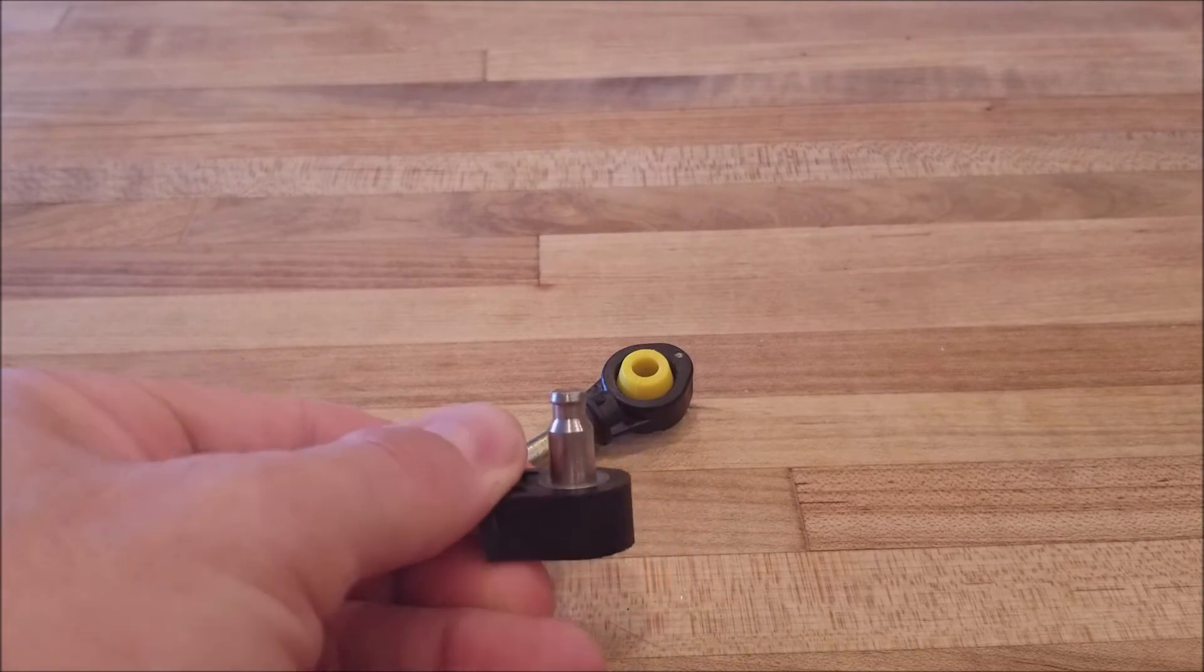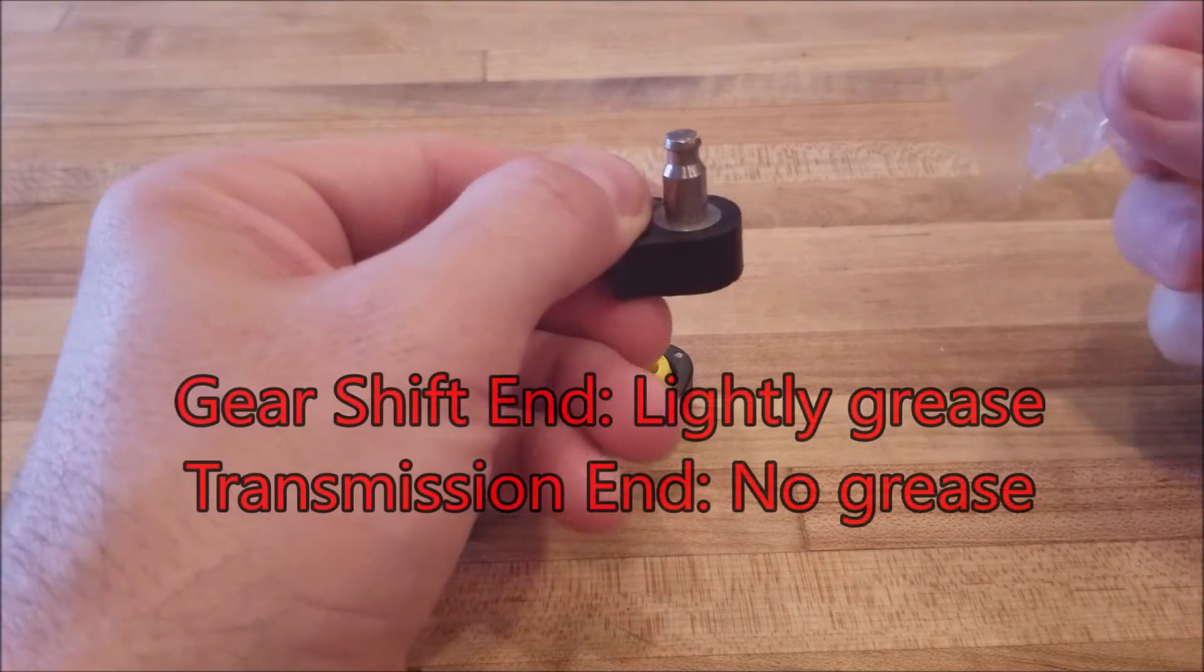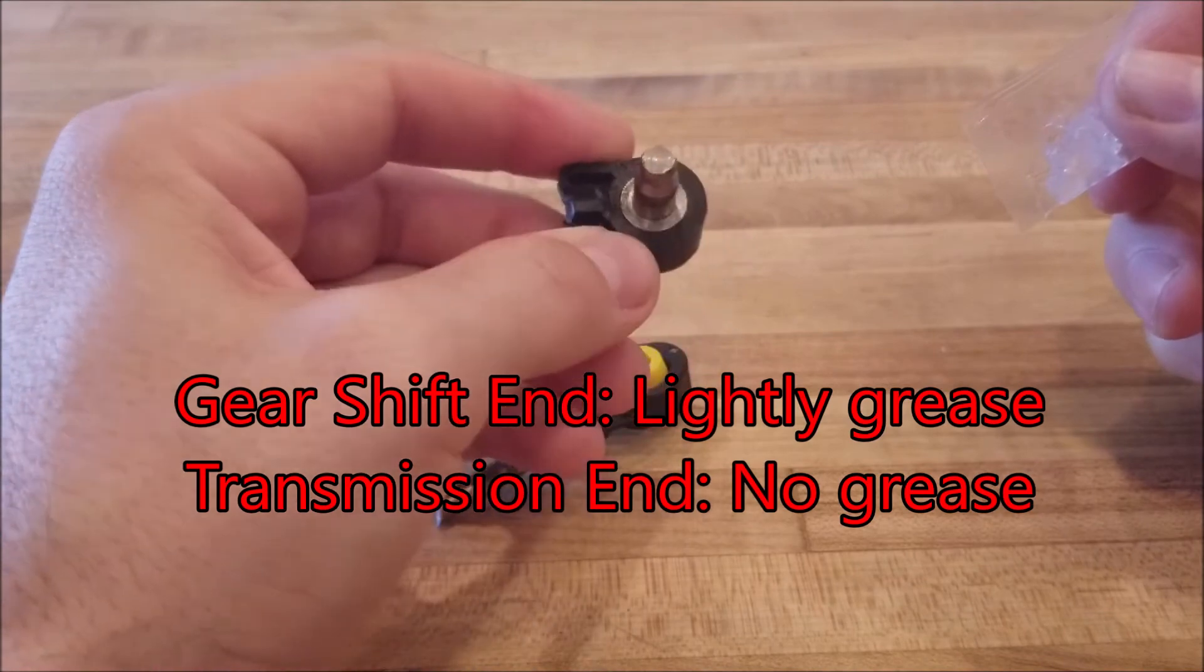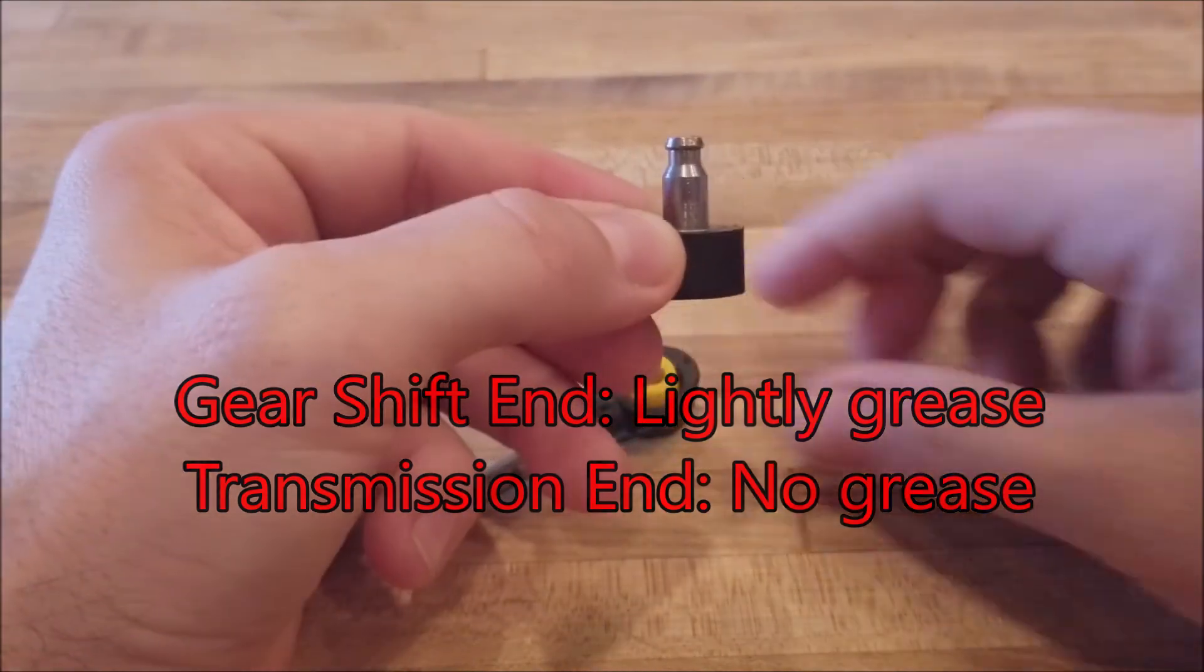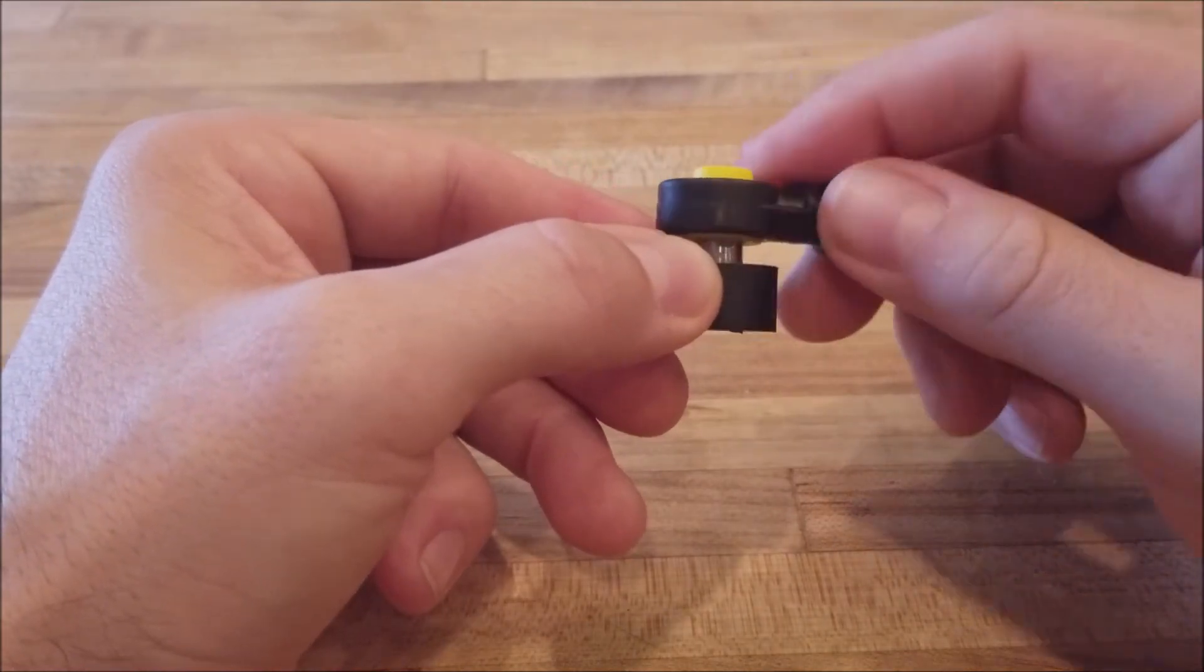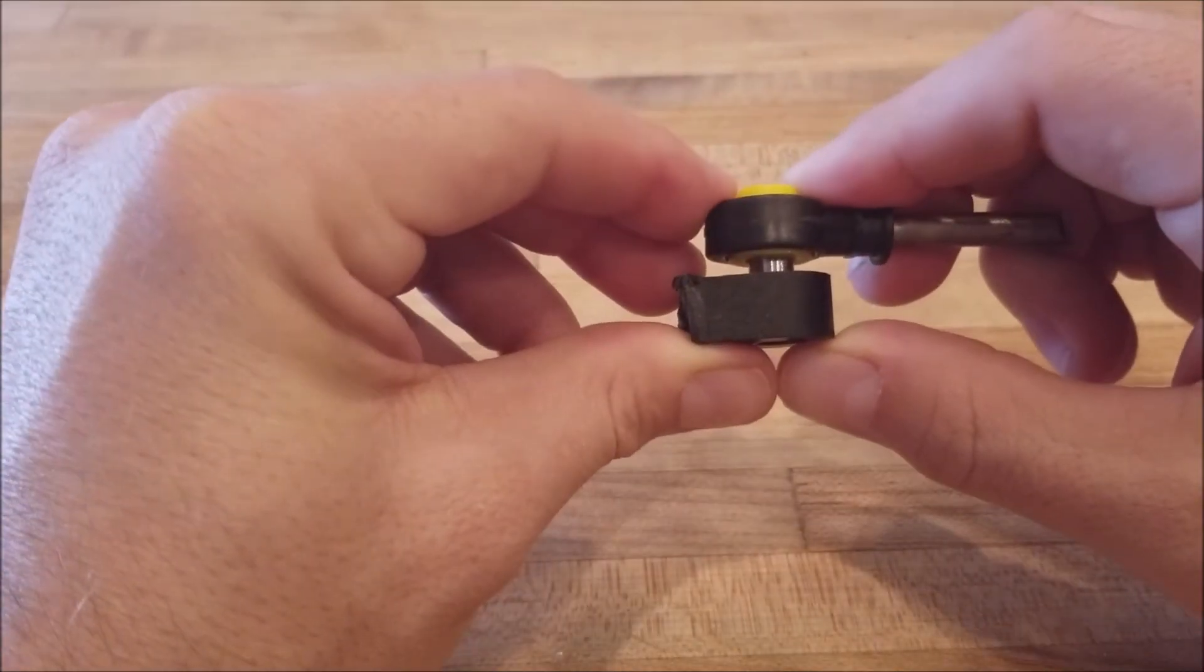We'll locate the shift lever pin, and if it's an interior shift lever, you can use a small amount of grease and put it directly on the pin. If it's an exterior shift lever, don't use any grease on it. You can discard the grease.